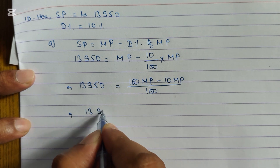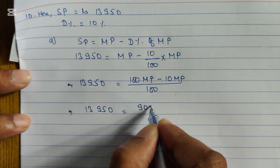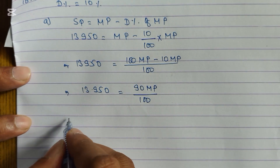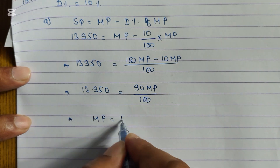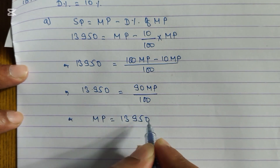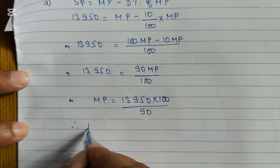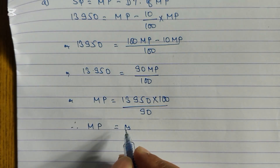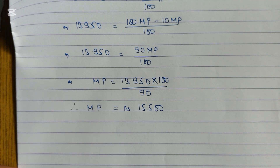So 13,950 = 90MP divided by 100. Cross multiplying: MP = 13,950 × 100 divided by 90. Calculating this, the value of MP is equal to rupees 15,500.